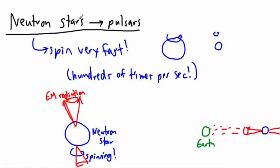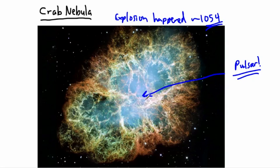Neutron stars are pulsars. Just what we call a pulsar on Earth is only when it's lined up with us. Well, it turns out this one in the Crab Nebula is lined up with us. So this one right here is a really good test for our models — our ideas of what happens with stars are at least well supported by what we see.